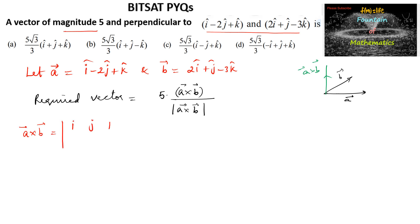The first row ijk. In the second row, we can take the vector a components 1, minus 2 and 1. And in vector b, the components in the third row, 2, 1 and minus 3.